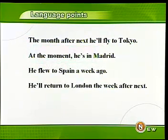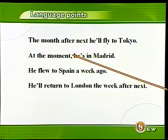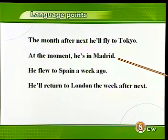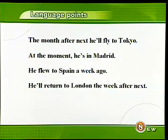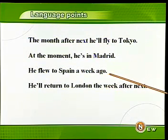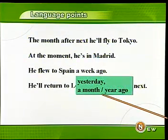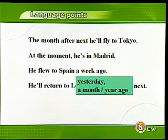那么现在Nigel在什么地方呢？At the moment，此刻，现在。He's in Madrid，他正在马德里，也就是西班牙的首都。他是什么时候去西班牙的呢？He flew to Spain a week ago，他一个星期以前飞往西班牙的。昨天是yesterday，一个月以前是a month ago，一年以前是a year ago。